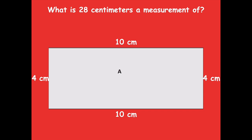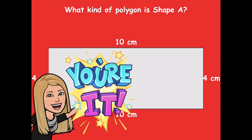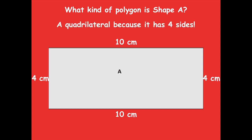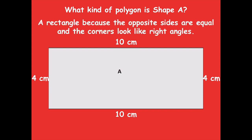So what is 28 centimeters a measurement of? That's the perimeter — the outside part of the shape. What kind of polygon is shape A? We could describe it a couple of different ways. We could say it's a quadrilateral because it has four sides — that's all a quadrilateral needs, four straight sides. We could also say it's a parallelogram because it has two sets of parallel lines. And we could say it's a rectangle because opposite sides are equal and the corners appear to be right angles.